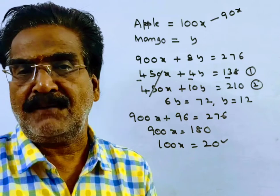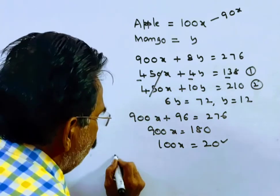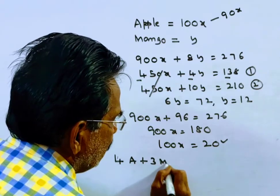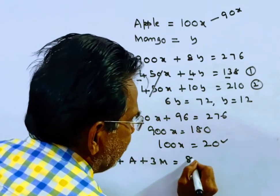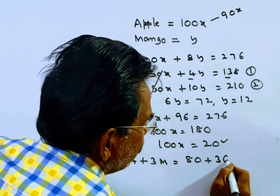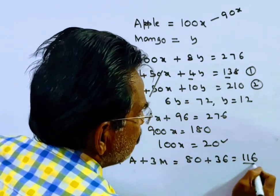Now we want the price of 4 apples and 3 mangoes. That equals 4 times Rs. 20 plus 3 times Rs. 12, which is Rs. 80 plus Rs. 36, equals Rs. 116. This is your answer.